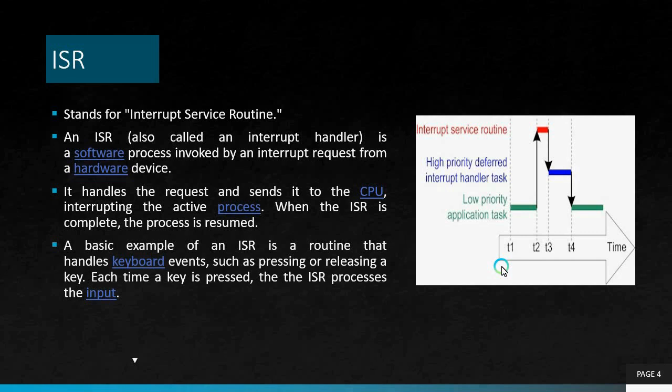After completion of the high priority task, control is returned back to the low priority task and its execution continues. The ISR handles requests from a hardware device and sends the request to the CPU by interrupting the active process. When the ISR is complete, the process is resumed. A basic example is a routine that handles keyboard events such as pressing or releasing a key — each time a key is pressed, the ISR processes the input.